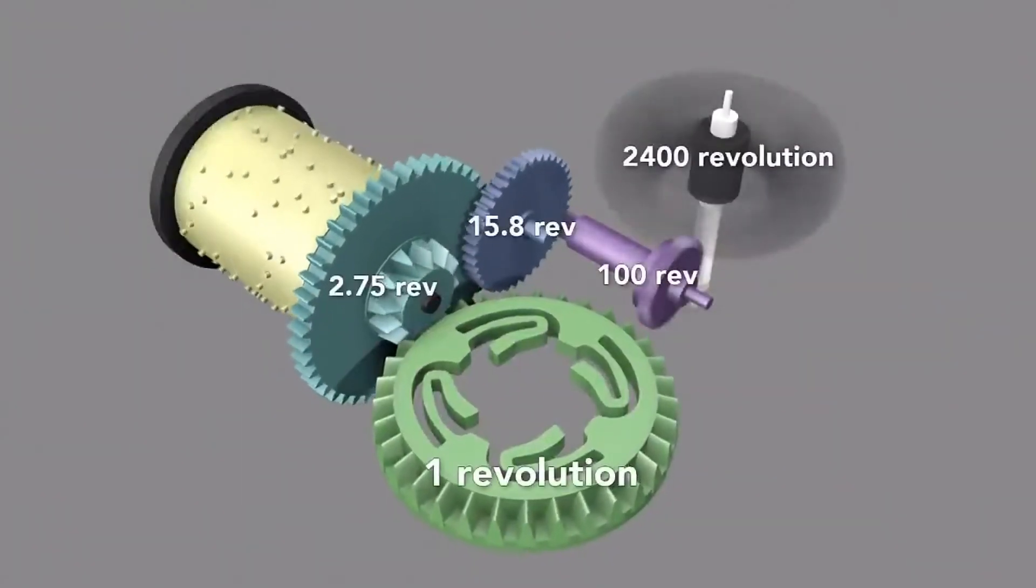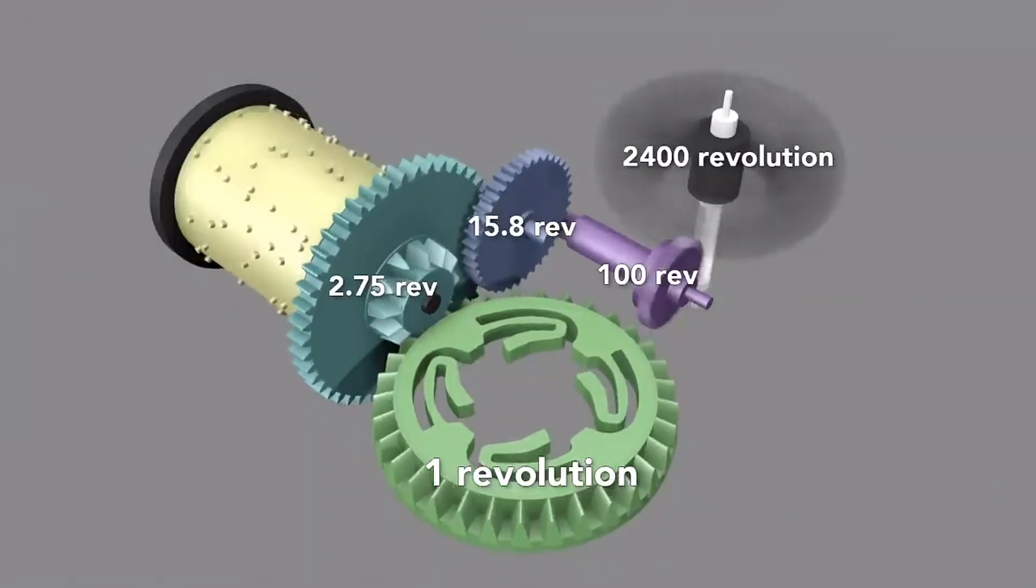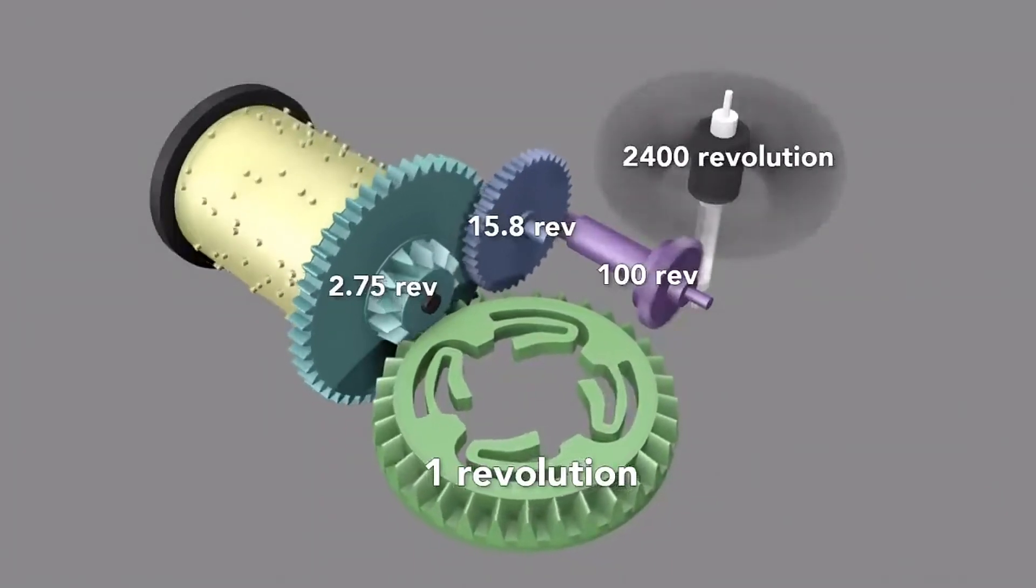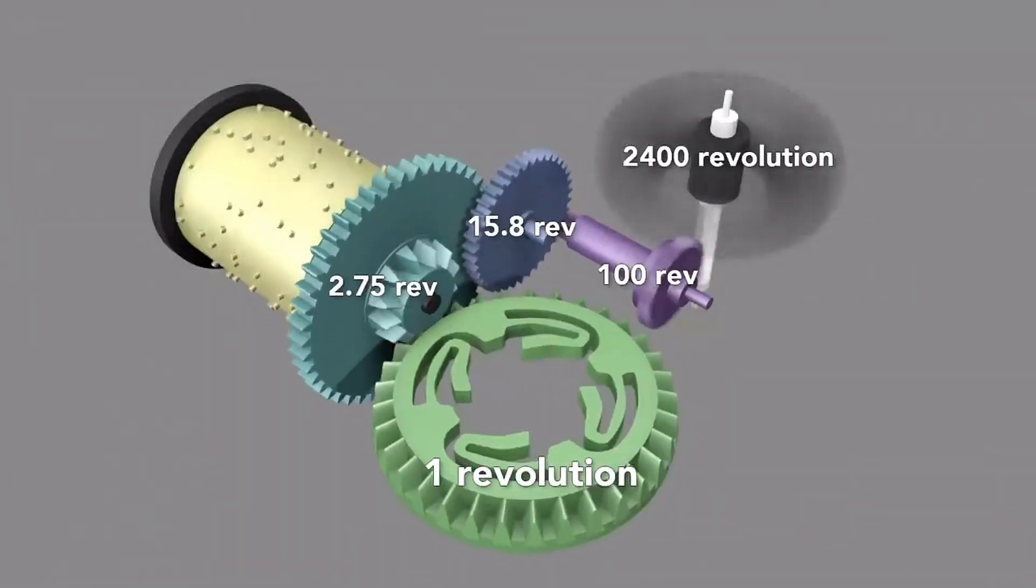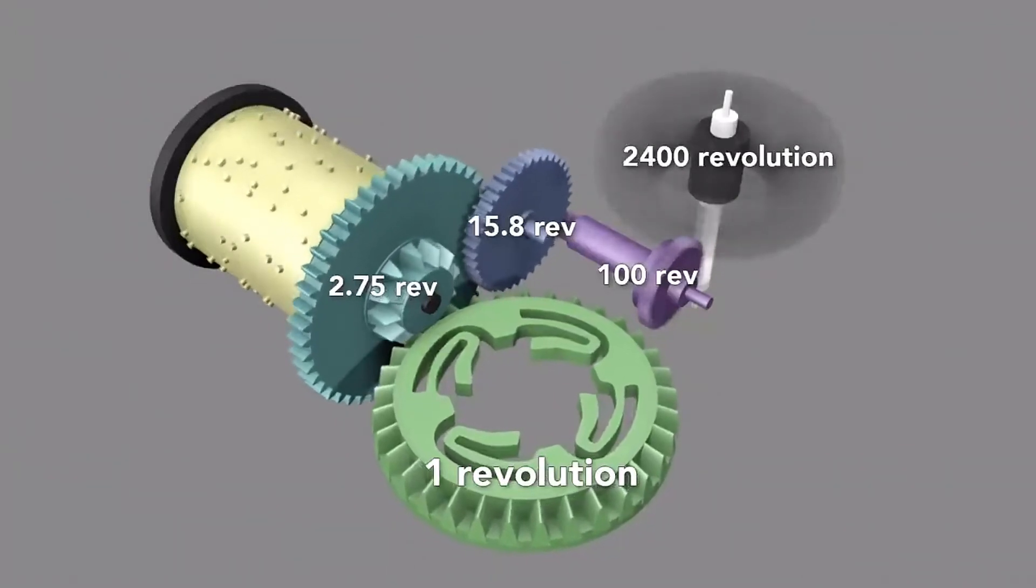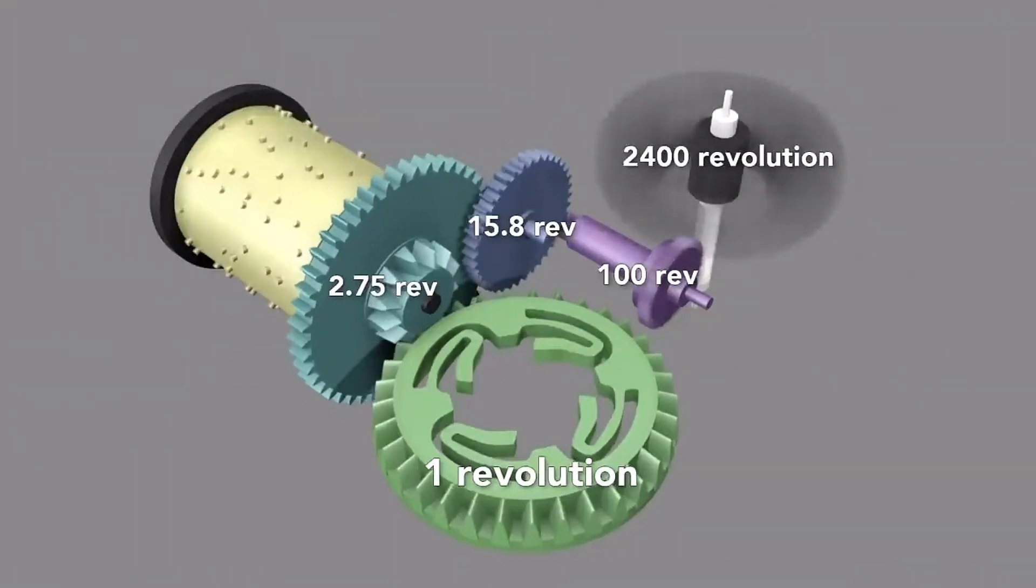This means that for every single revolution of the first bevel gear, the governor rotates 2,400 times. Since the first gear rotates roughly 1.5 times a minute, the governor spins at 3,600 revolutions per minute.